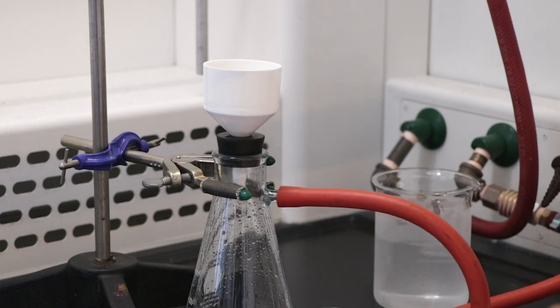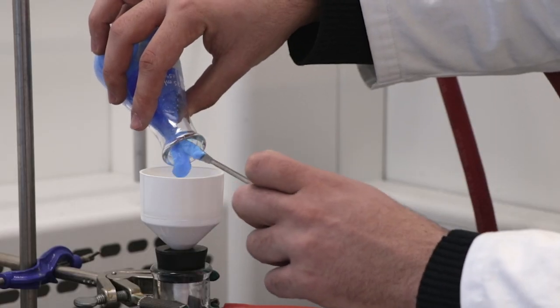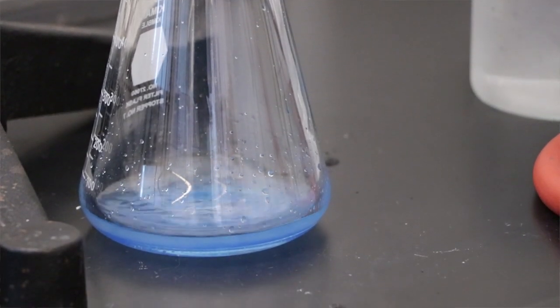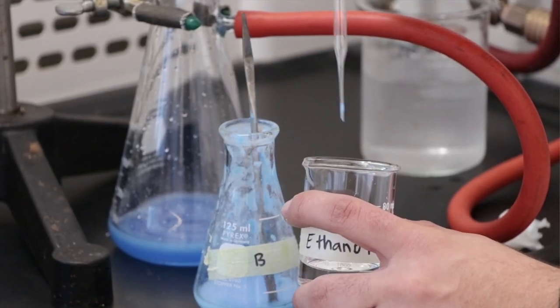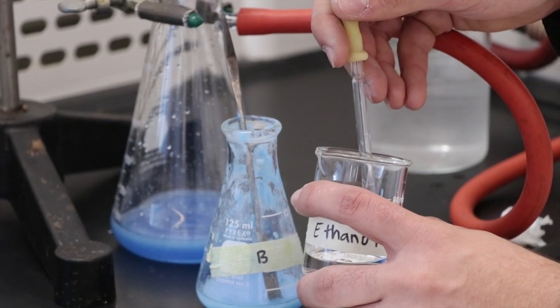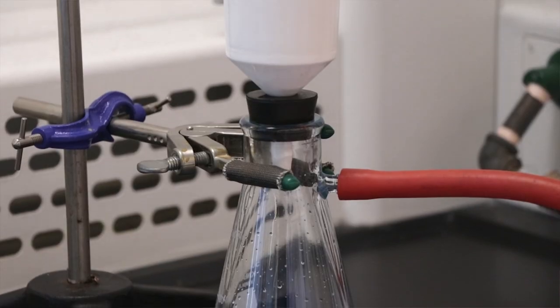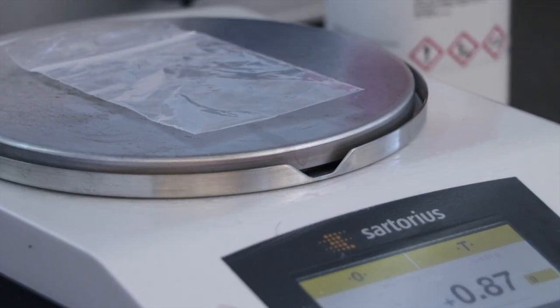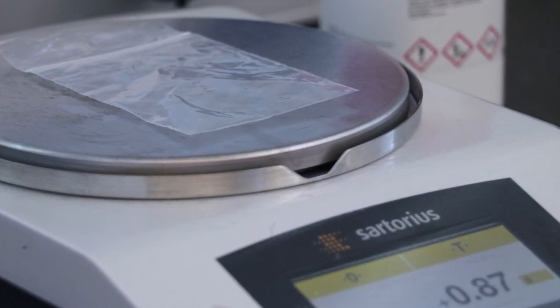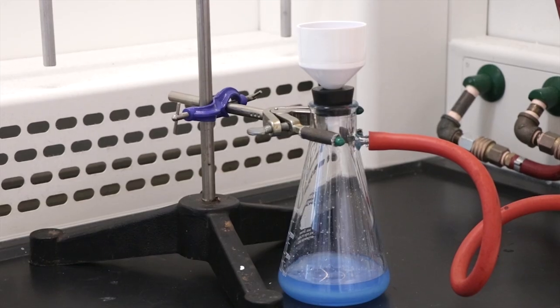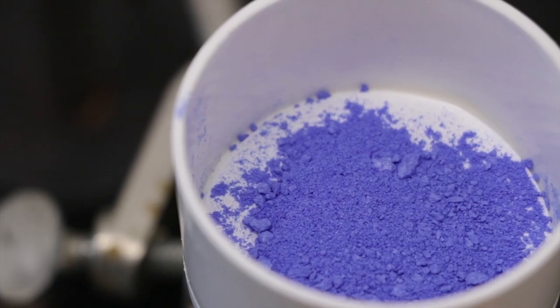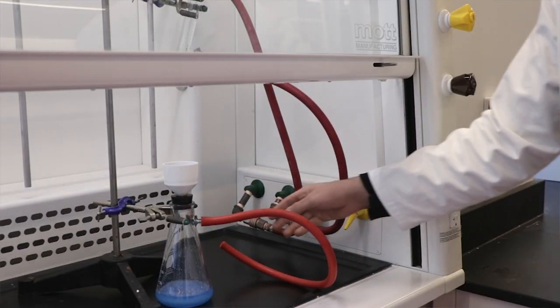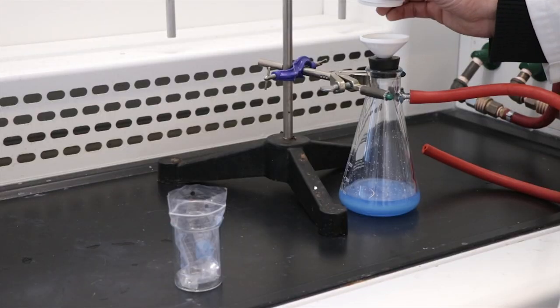Using a spatula, transfer the product into the funnel. Use a few mLs of cold ethanol to rinse out all the precipitate from the Erlenmeyer flask into the Buchner funnel. Allow the product to dry thoroughly. In the meantime, pre-weigh a plastic bag and record the weight in your lab notebook. Once the product is completely dry, detach the tubing from the yellow outlet before turning off the vacuum.